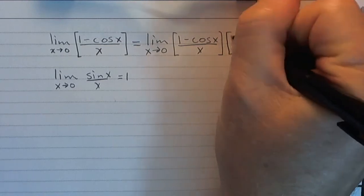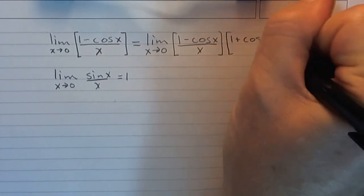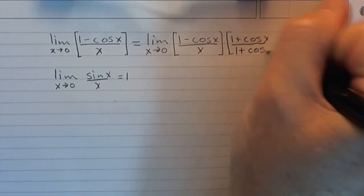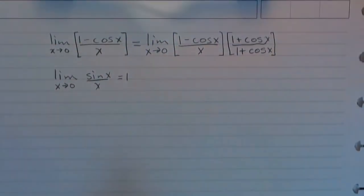And let's just multiply the top and the bottom by the conjugate, 1 plus cosine x. Like that.